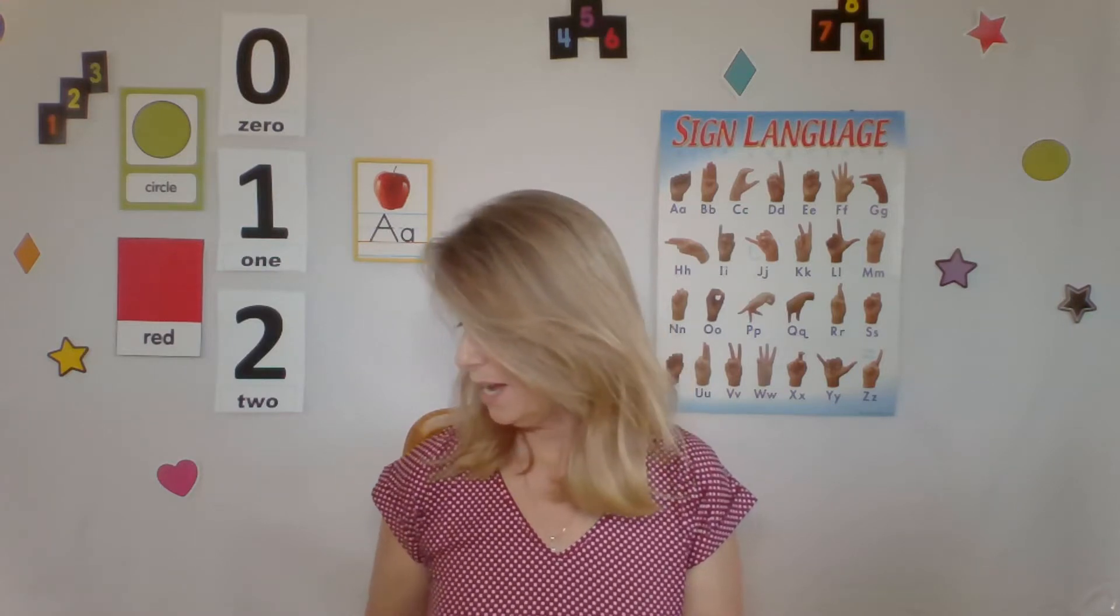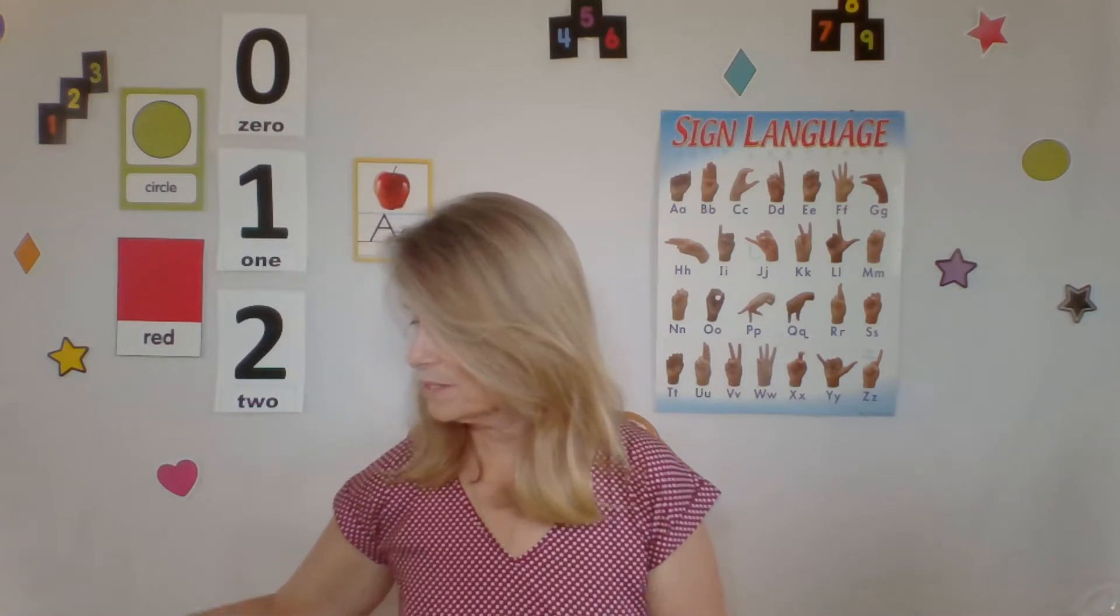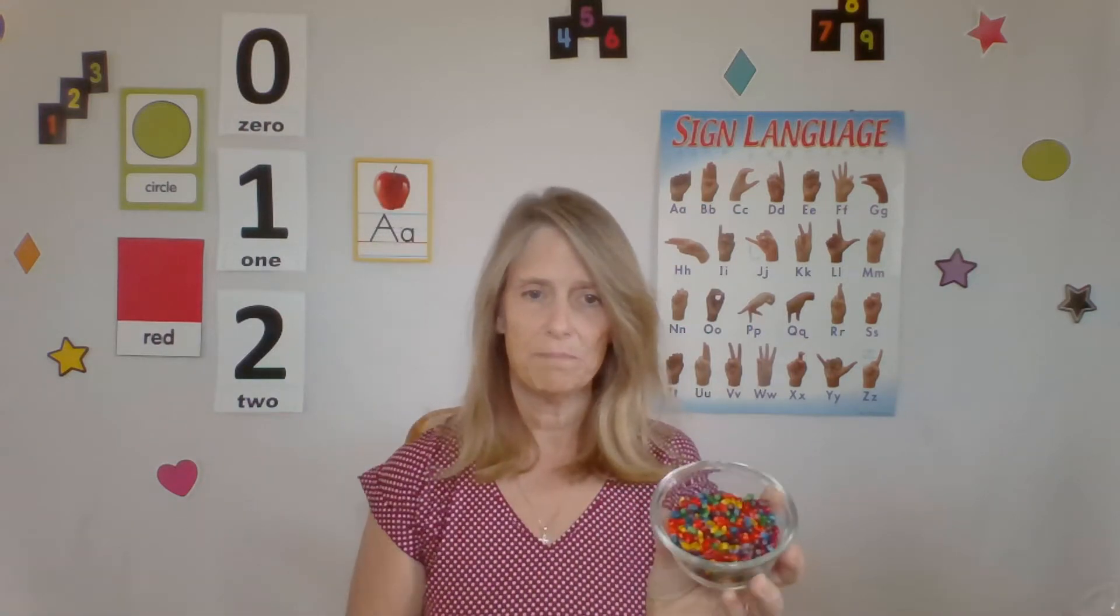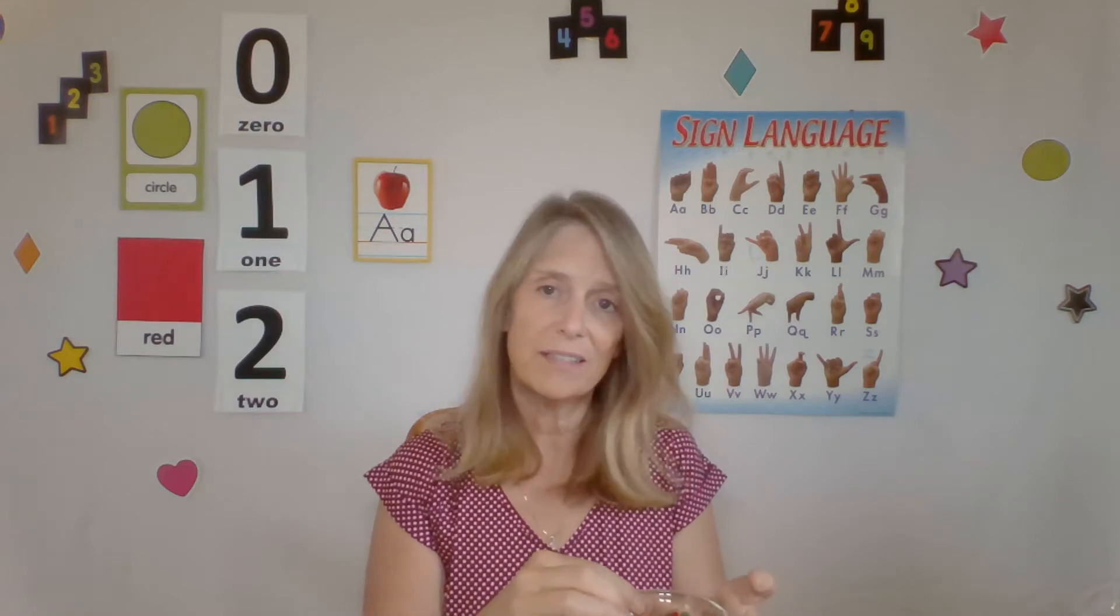A third thing, corn kernels. I also have some colored corn kernels here. Let me show you these. These are vibrant and beautiful. It's just popcorn kernels. That's all you need to grab. It's just a different texture than the rice, the noodles. You can get all three of these and just throw them in there one at a time or all together and let your child explore that texture.